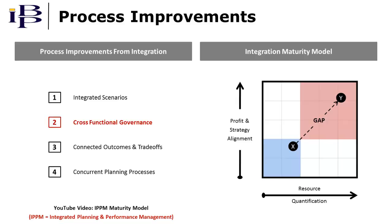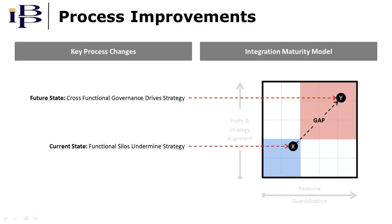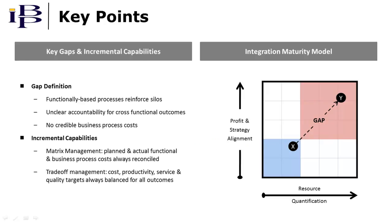In this one, we'll focus on cross-functional governance. More specifically, we'll focus on the capabilities that comprise the gap between current state processes and those that are required to overcome functional silos that can undermine performance and strategy execution. During the video, we'll highlight these capability gaps in more detail as summarized on the left side of the screen. We'll also identify specific incremental capabilities that address these gaps, ones that enable more mature forms of process integration.